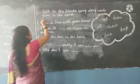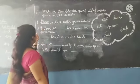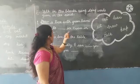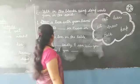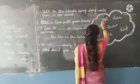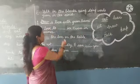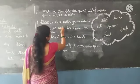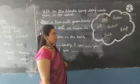Second sentence: I love to blank ice cream in summer. So: I love to eat ice cream in summer. E-A-T. 'Eat' is the doing word here.